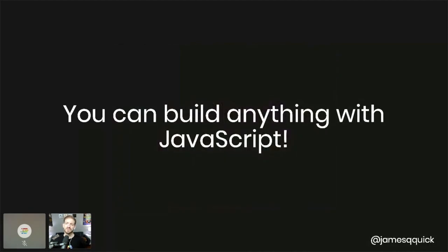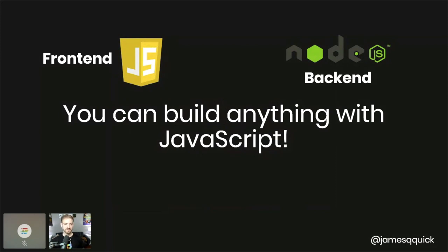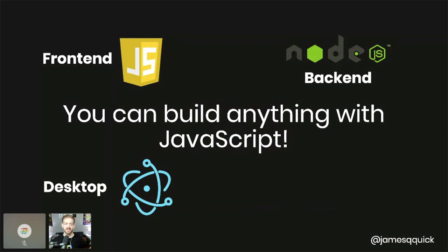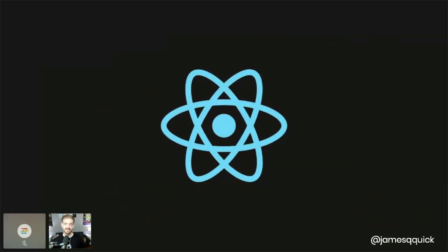The beautiful thing about JavaScript now is that you can literally build anything with it. You can build front-end applications, server-side or back-end applications with Node.js, desktop applications with Electron.js using HTML, CSS, and JavaScript — VS Code is actually an Electron application — and mobile applications with React Native. Front-end, back-end, desktop, mobile, scripts — you can really do anything with JavaScript, and that's the beauty of it.